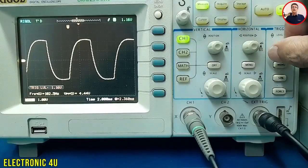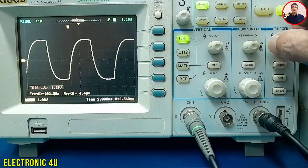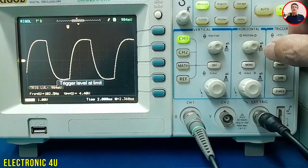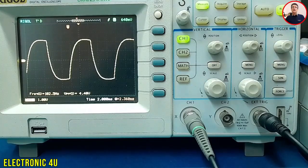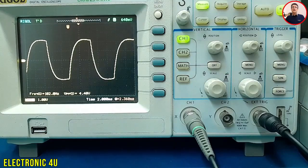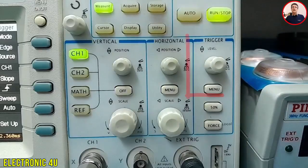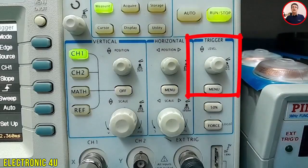We still have controls like the slope knob to choose the rising or falling edge of our reference signal. But here's the important part: the trigger level knob now affects the reference signal we connect to the external trigger input, not the waveform we see on the screen. With this knob, we decide at what voltage level our input signal will trigger the scope.